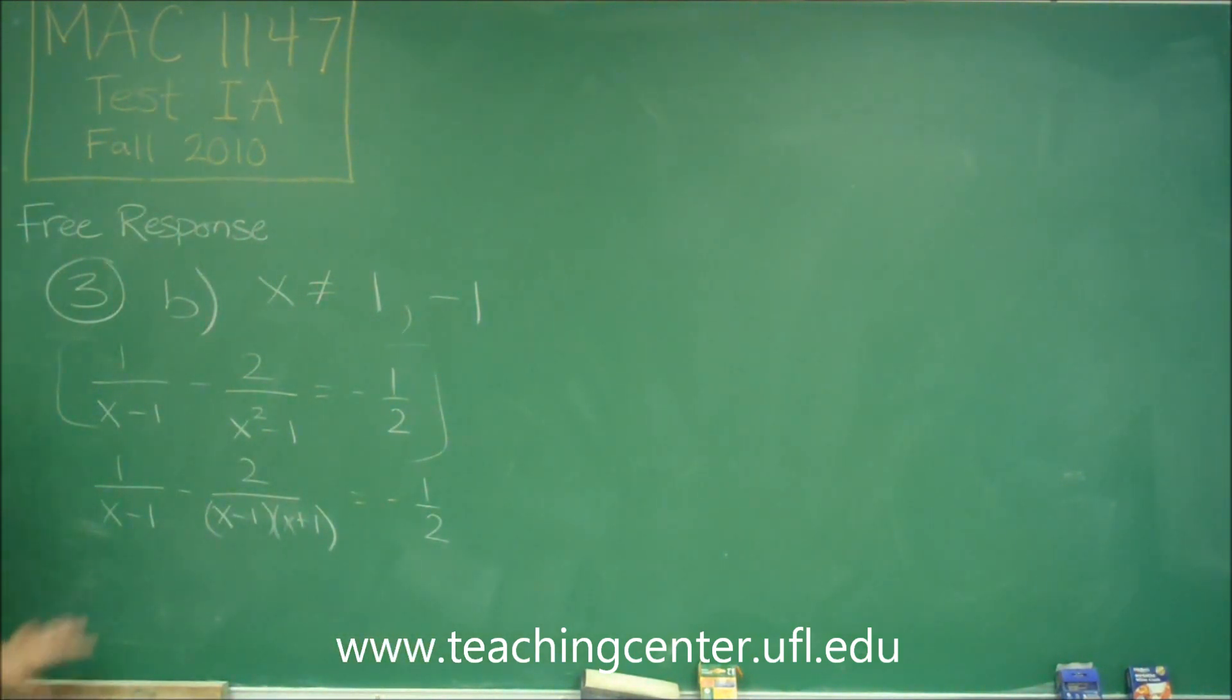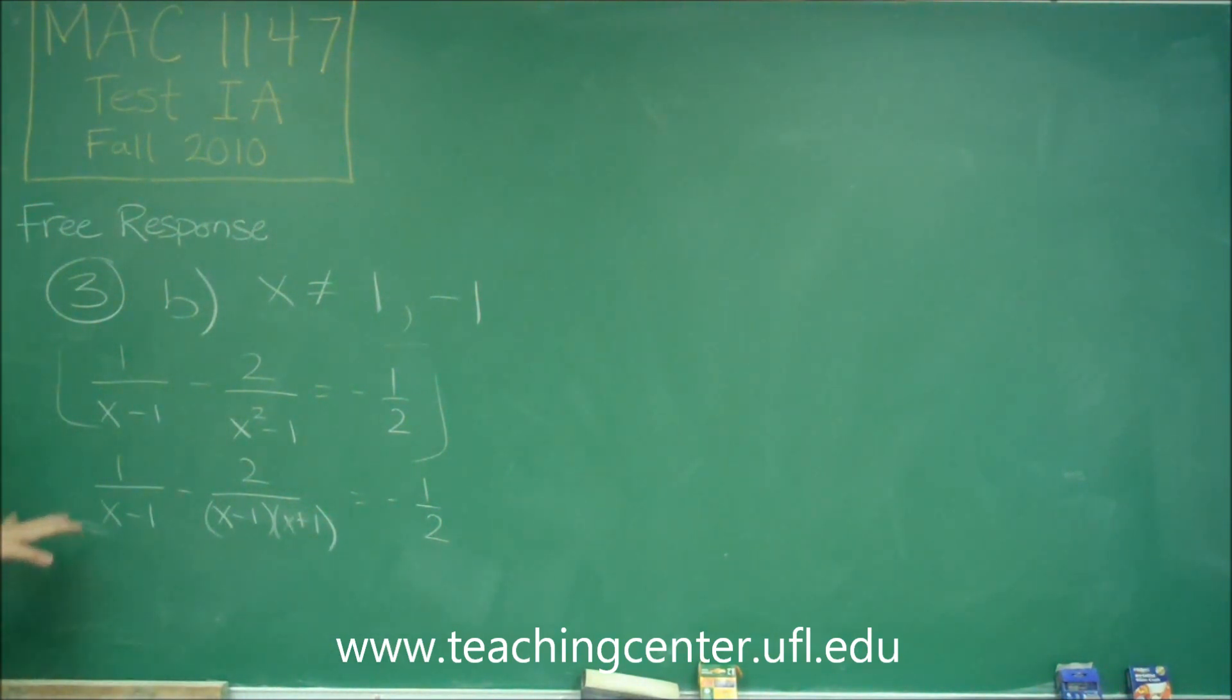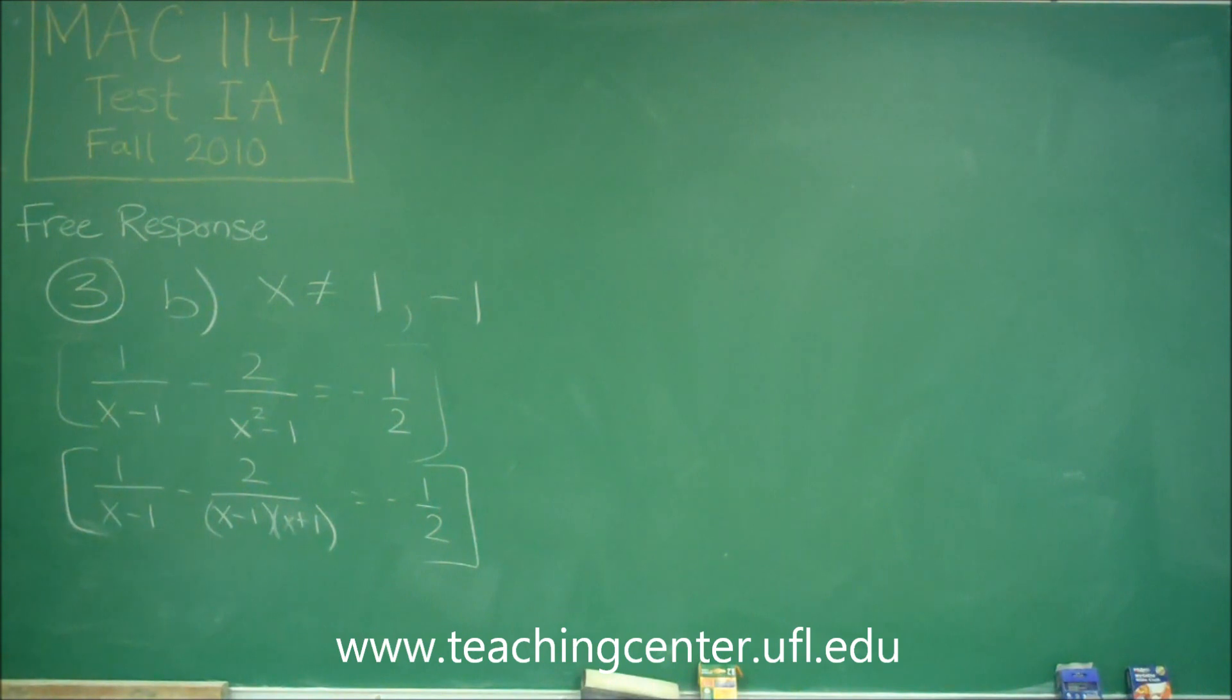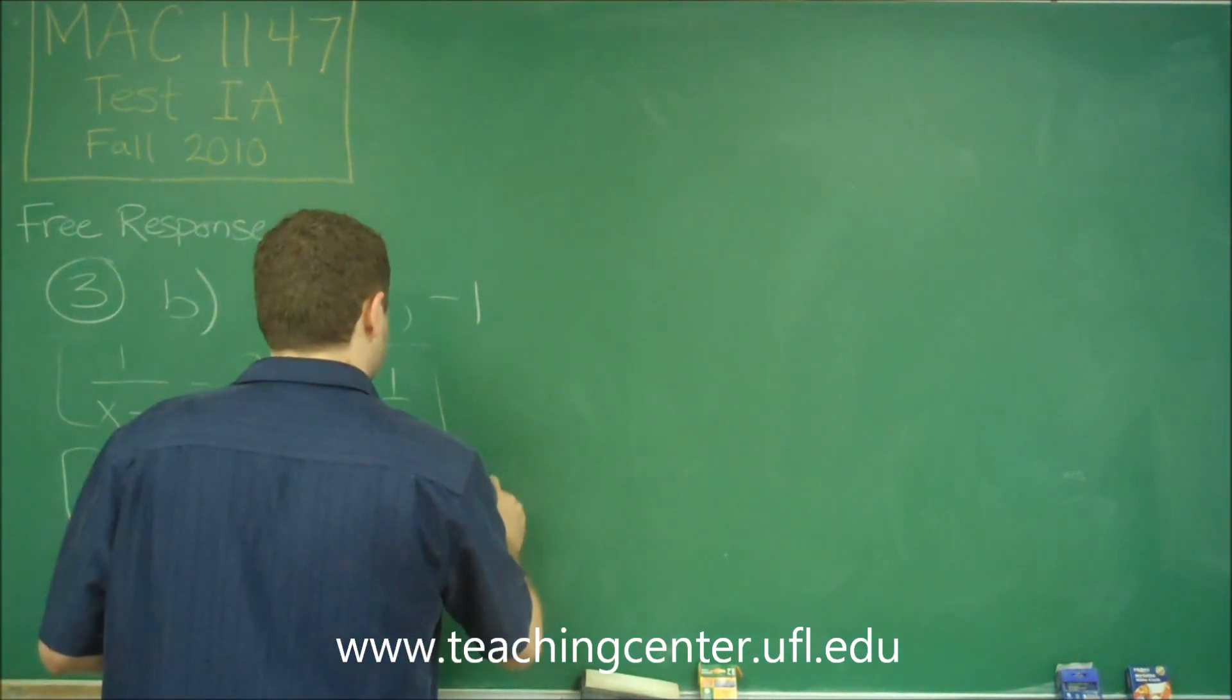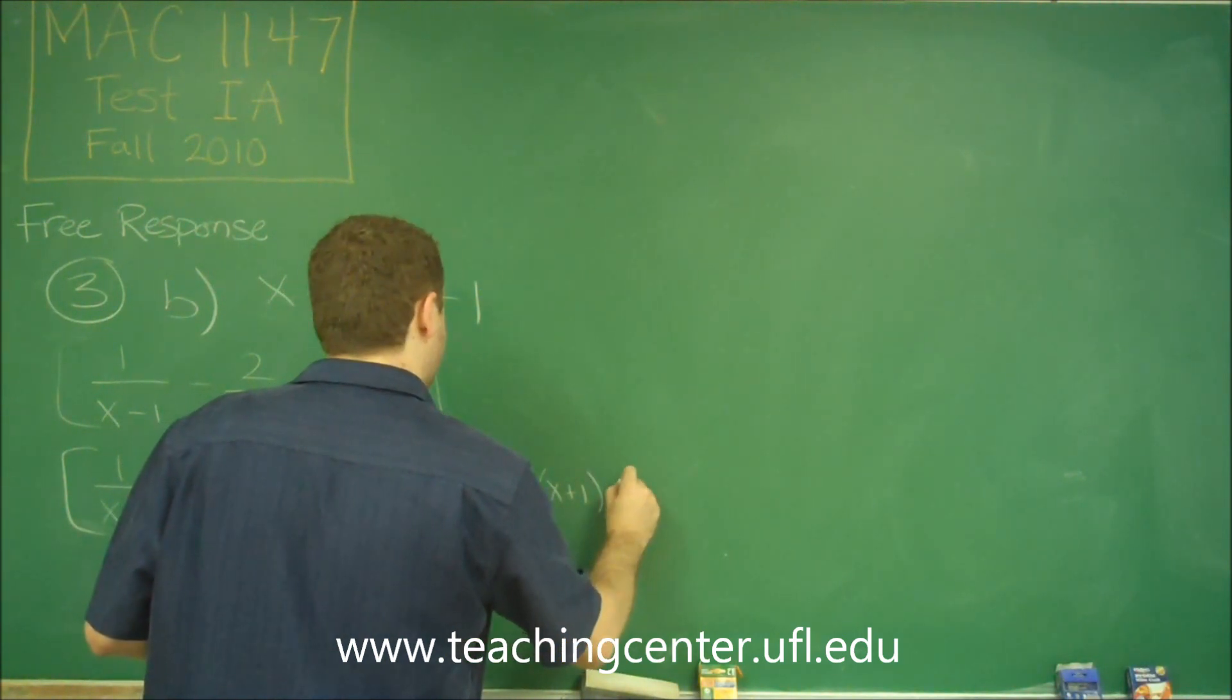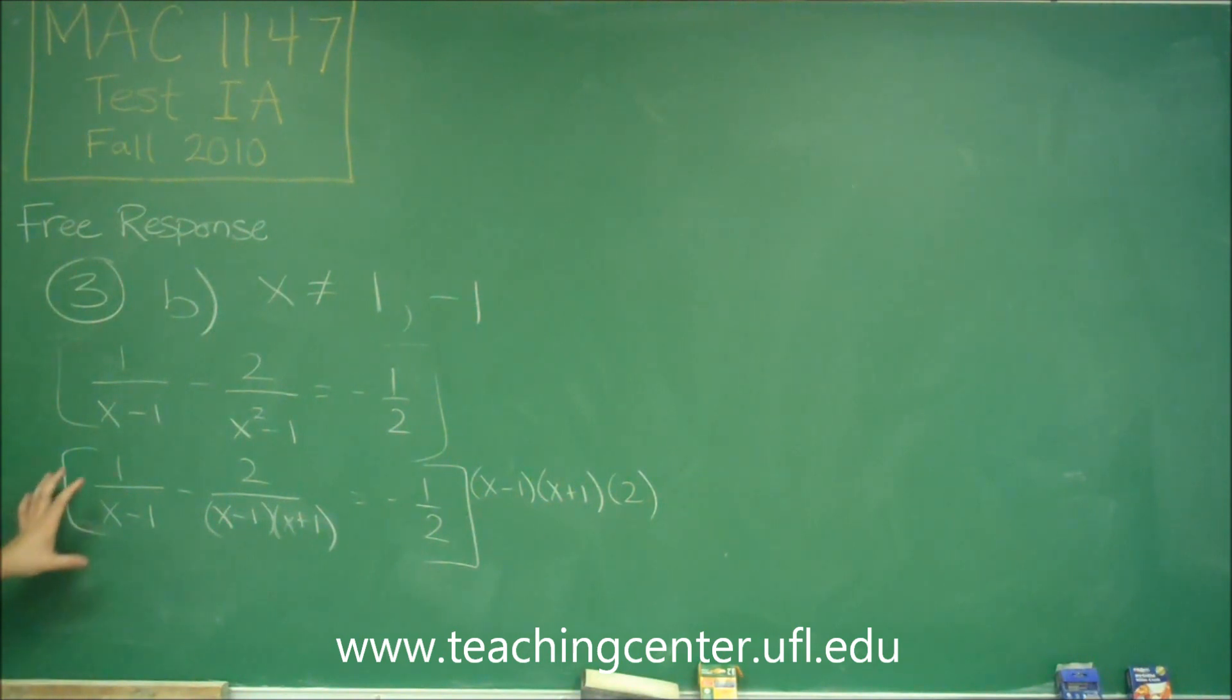What we need to do is multiply by all the terms that are in the denominators, so we get rid of all the denominators, and then we'll just be able to solve it normally. So we need to multiply by x minus 1, by x plus 1, and by this 2 over here. And by multiplying everything times these, we'll get rid of all the denominators, and then it will just become a simple quadratic.